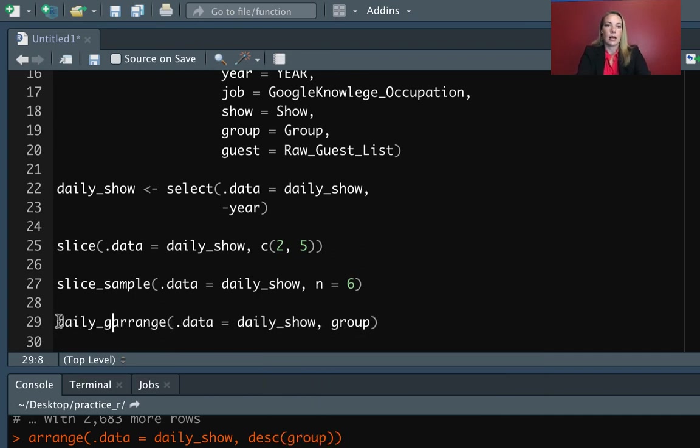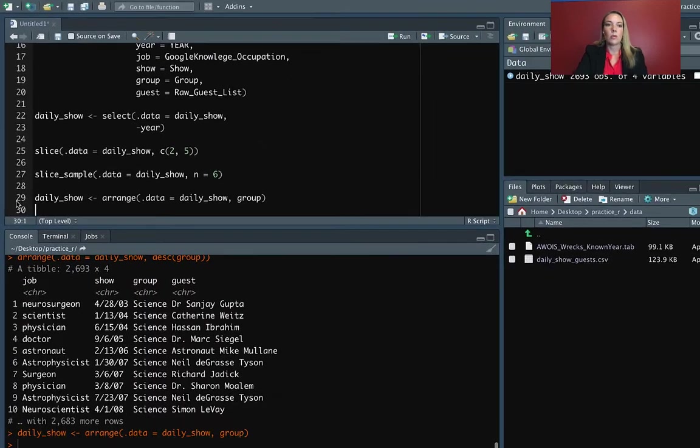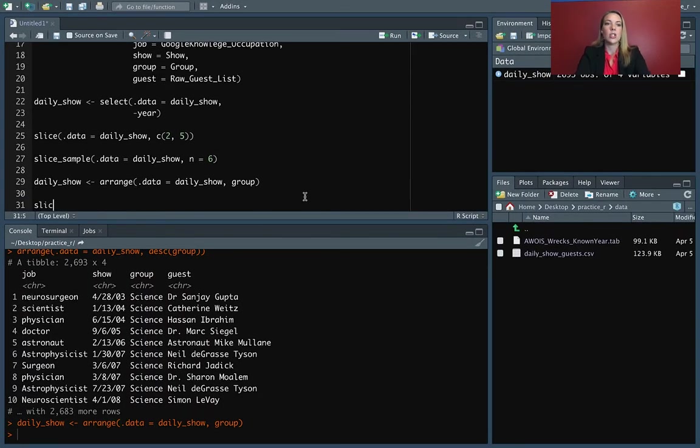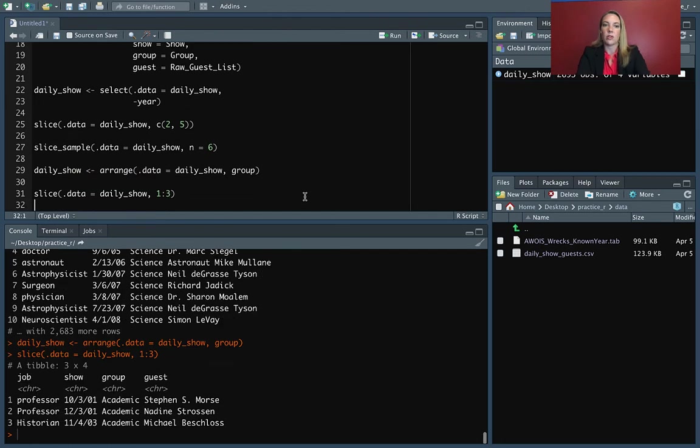So we can take a look over here at that as well. In this case, I'm going to assign that. Again, that means that instead of just printing out these changes that we've made, it will overwrite the original daily show. It'll overwrite that original object with the output from this. And that's what we'll have to work with in that daily show object from now on. So I'll run that. And then I can do slice now with that same object. And I can say that I want the first three rows and you can see it's first ordered them and then it has pulled out the three rows that I wanted.